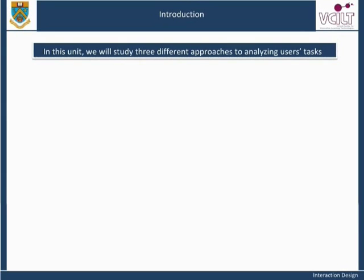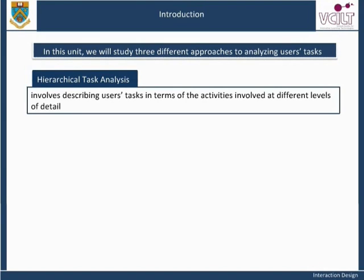In this unit, we will study three different approaches to analyzing users' tasks. Hierarchical task analysis involves describing users' tasks in terms of the activities involved at different levels of detail. Superficially, it looks a bit like the GOMS analysis that you studied in Unit 7, but, as you will see later in this unit, it is concerned with larger-scale tasks in the work domain, rather than user tasks involving the details of thinking and acting with a particular device.